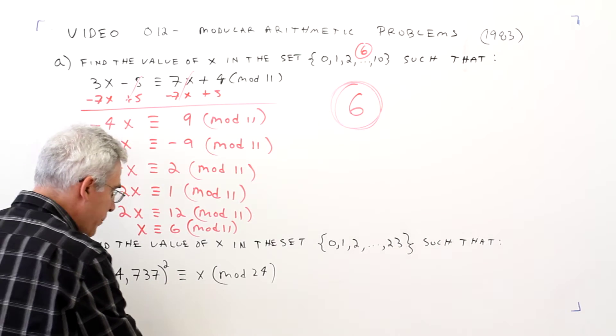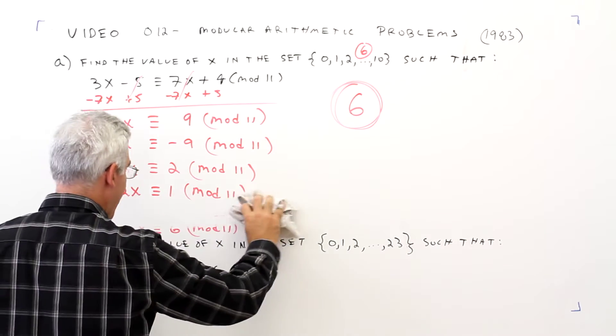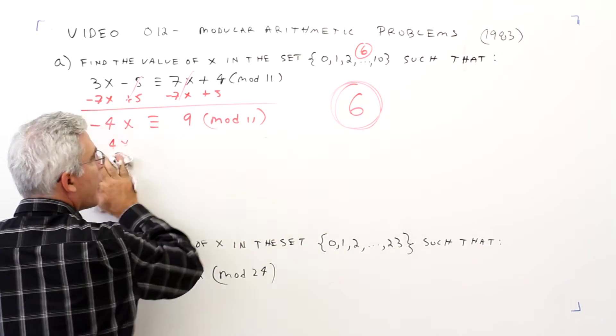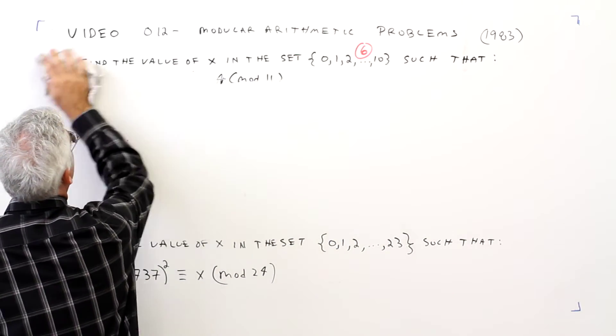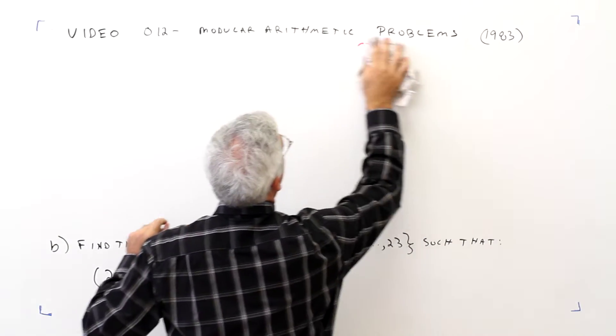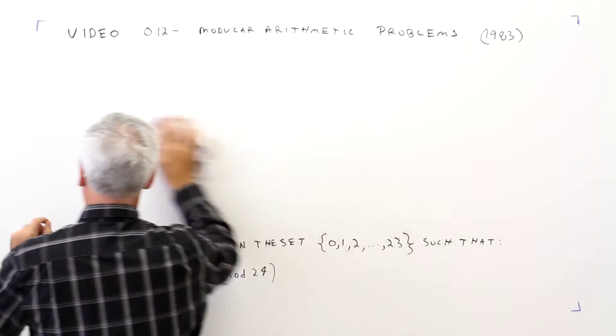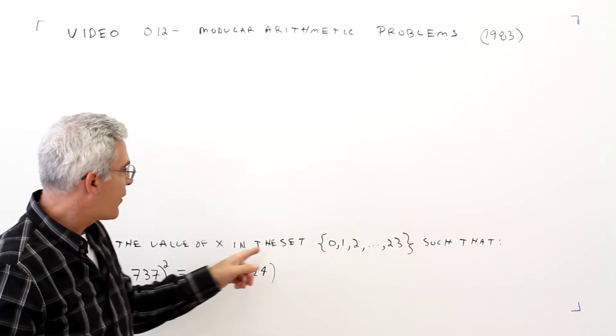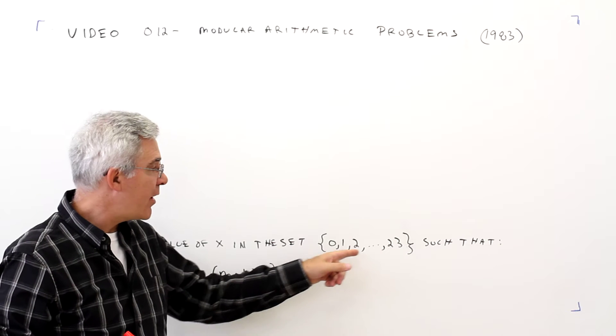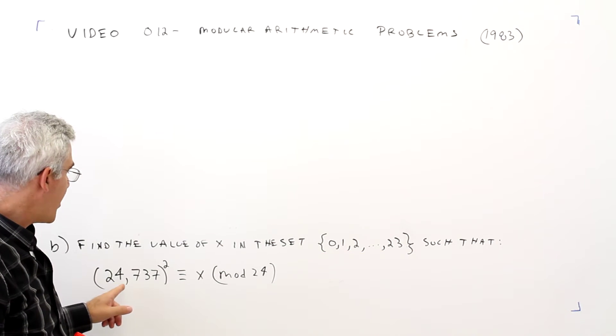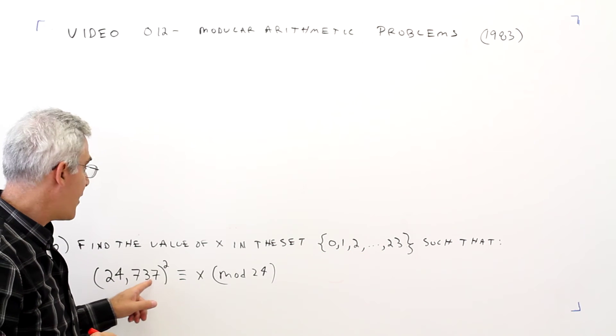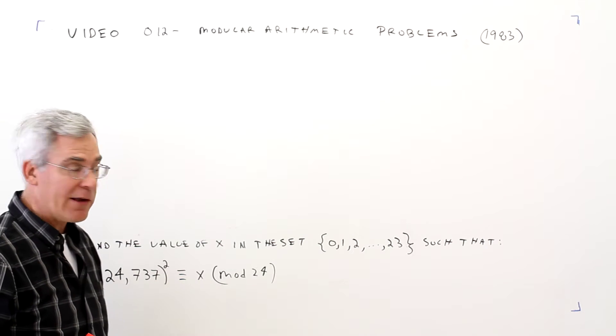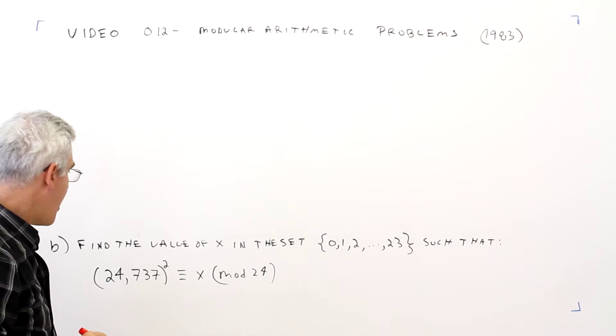All right, for the second part, I'm just going to do it up here to have more room. So I'll erase this. Okay, part B. Find the value of x in the set 0 through 23 such that 24,737 squared is congruent to x mod 24.